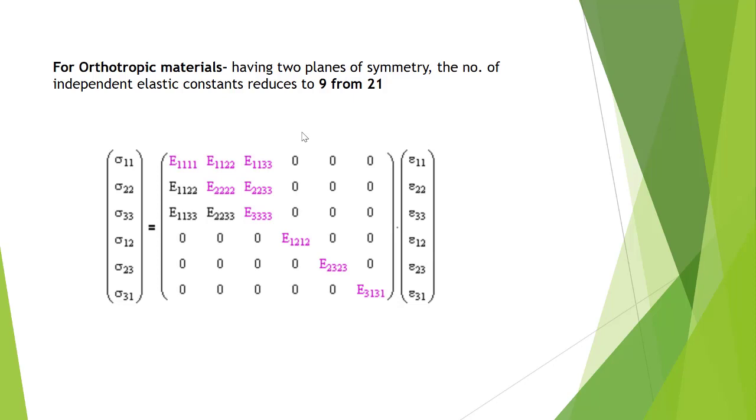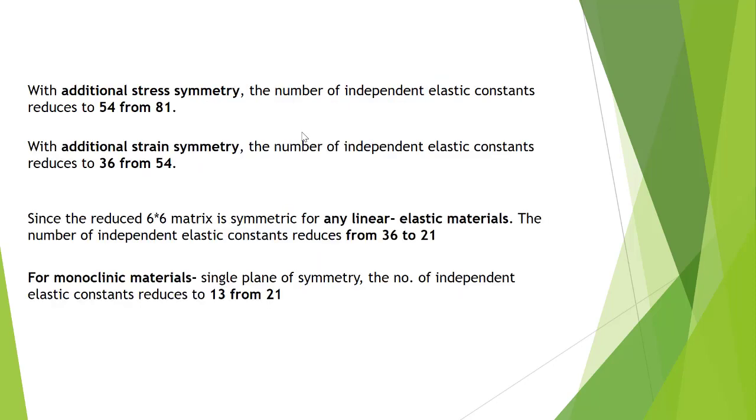That equals 3 times 7, which is 21. So 21 will be the reduced number of independent constants for any linear elastic material. If we consider monoclinic material, then this number 21 reduces to 13 because we are introducing a single plane of symmetry.